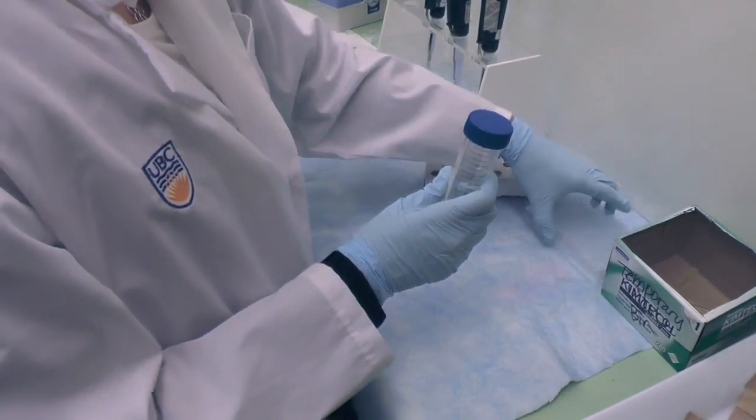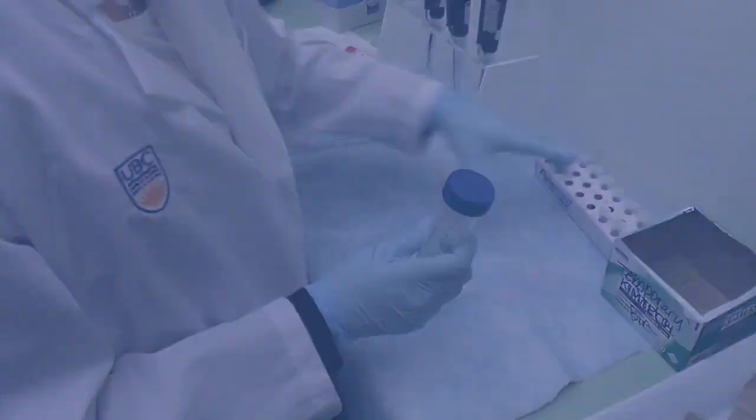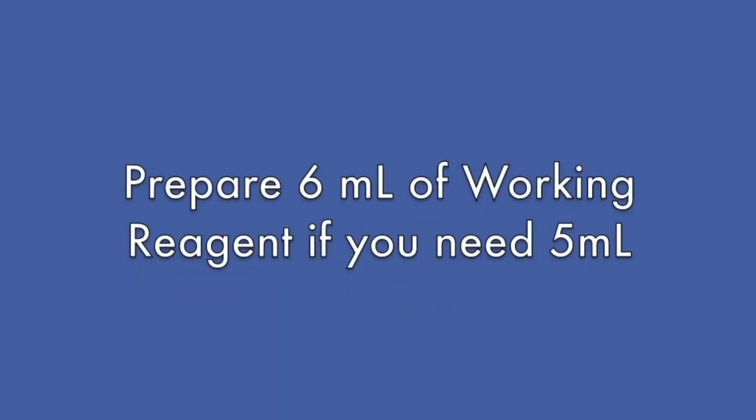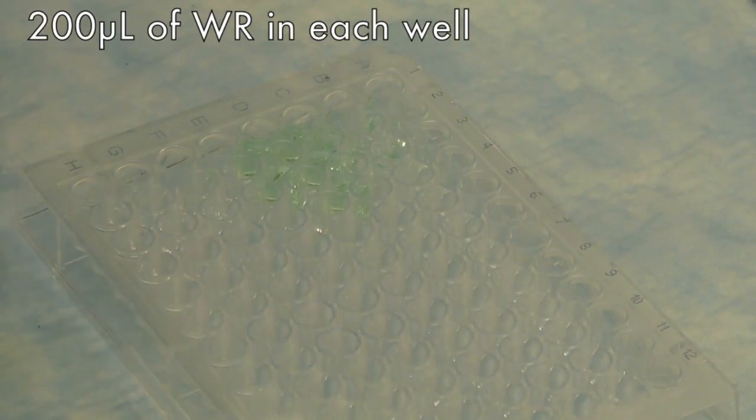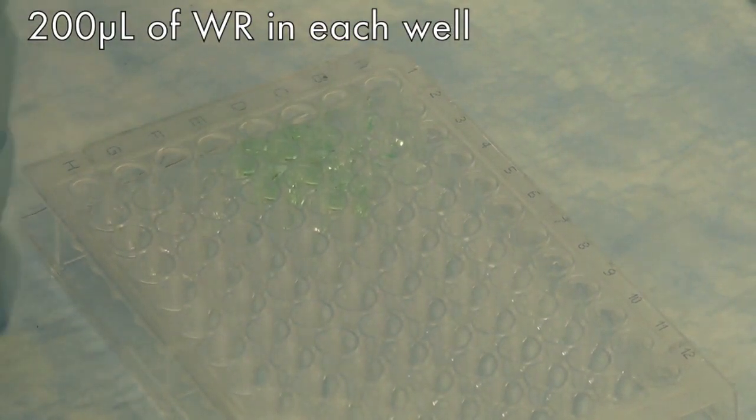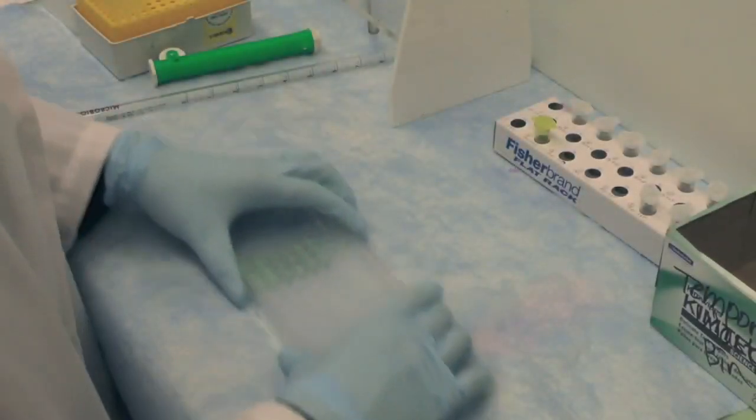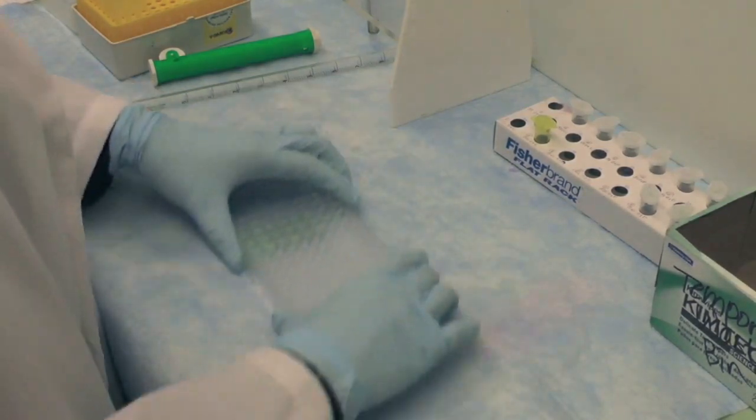It's recommended that you always prepare an additional 1 ml of working reagent just in case. Mix the BCA working reagent and add 200 microliters to each well. Move the plate in this way to gently mix the solution.